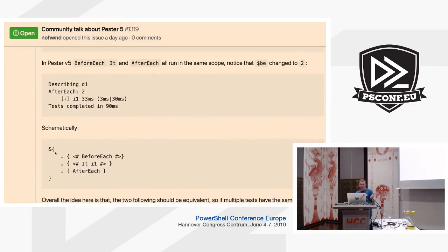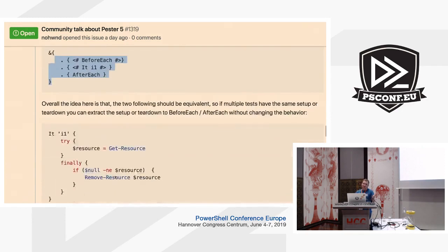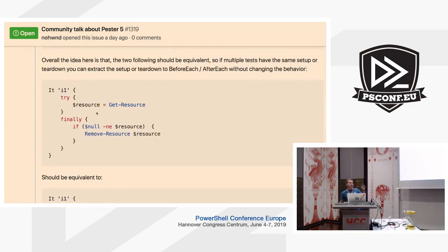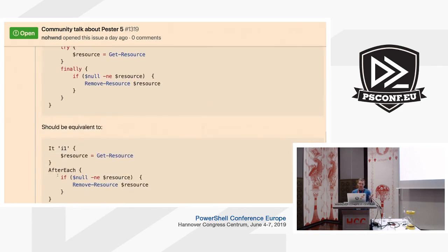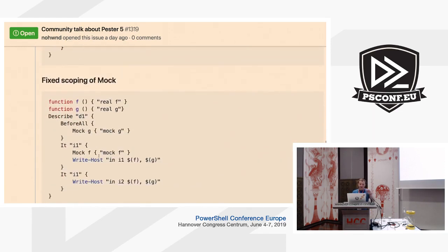What you want is to be able to overwrite the value. So all blocks should be in the same script scope. For example, if you're handling removing a resource yourself and refactor to use AfterEach as a finally block, this should pass without change. But in version 4 it fails because the resource variable doesn't exist in that scope. In version 5 it will be there because they're all in the same scope. That's one of the fixes.